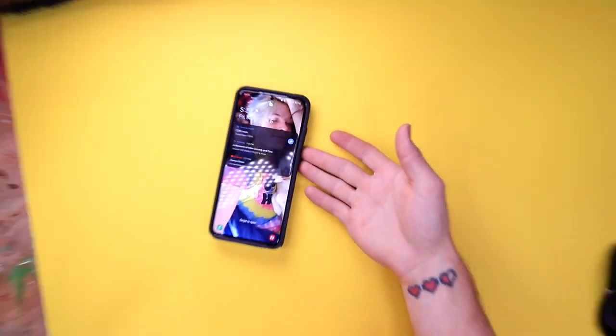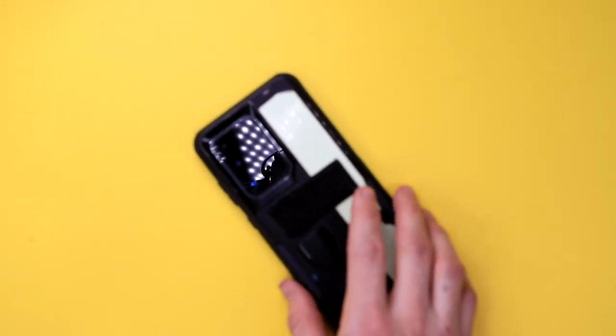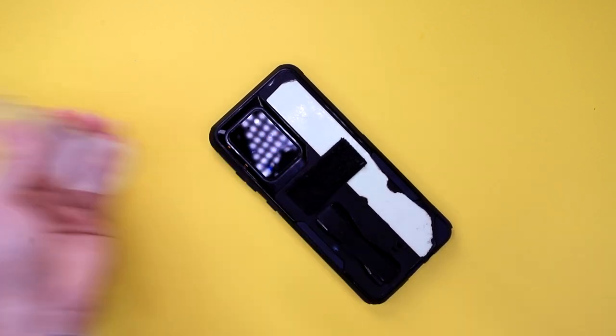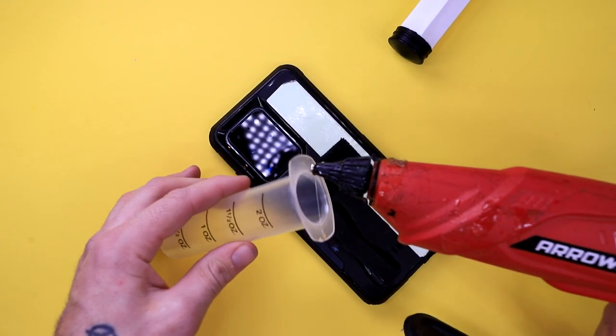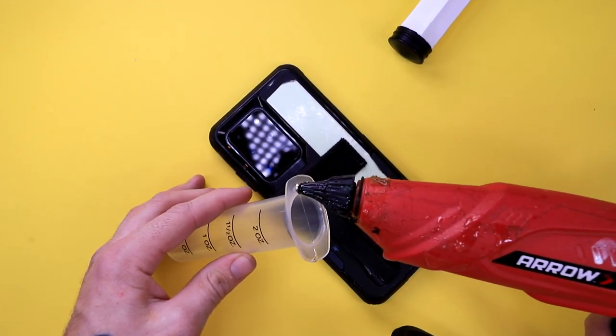All right guys, so here's our phone. Looks good, flip it over, then we get our syringe, take out that plunger, and then just go ahead and hot glue it onto our phone.